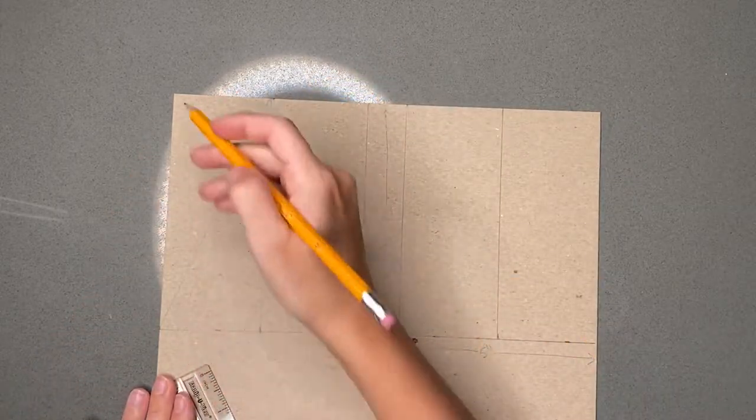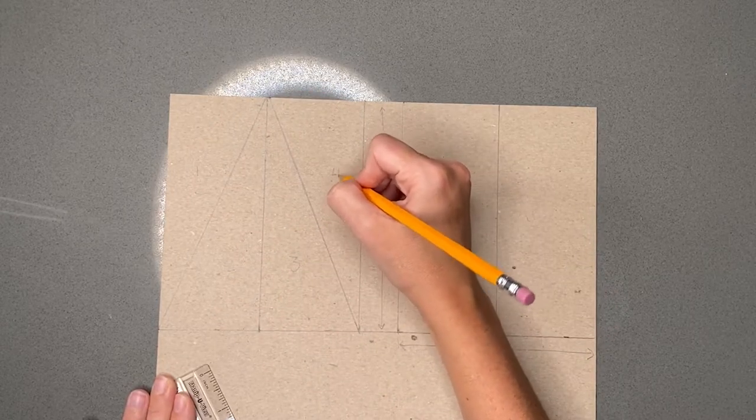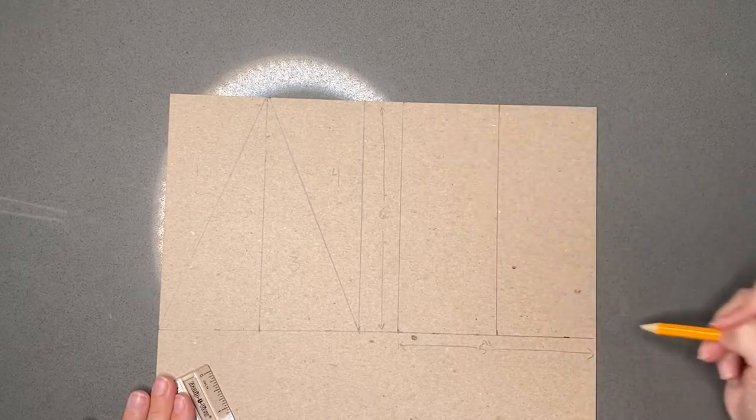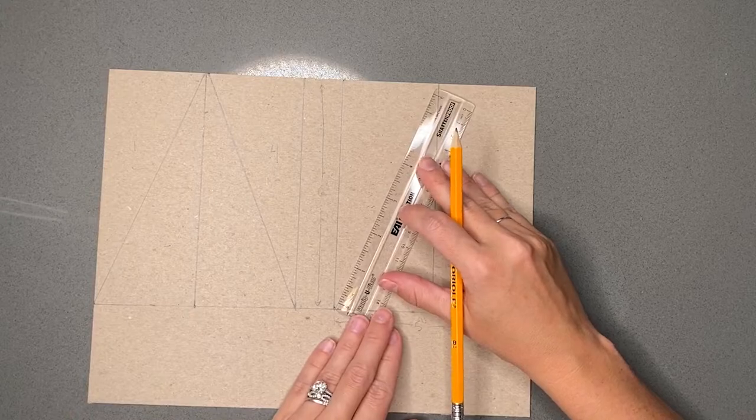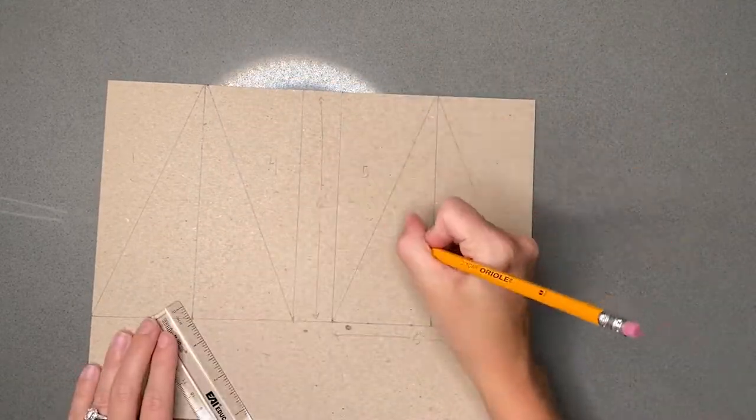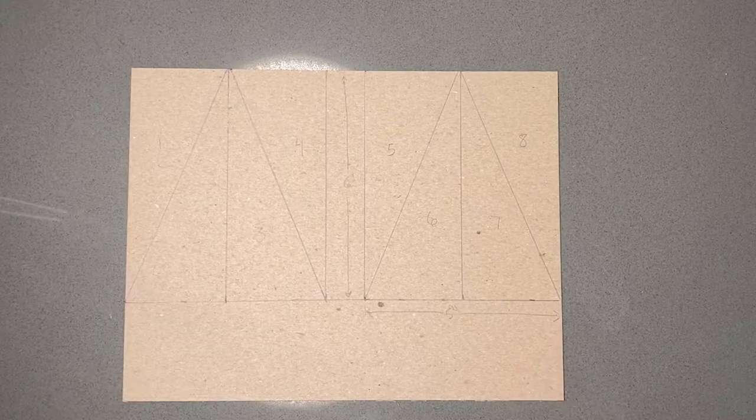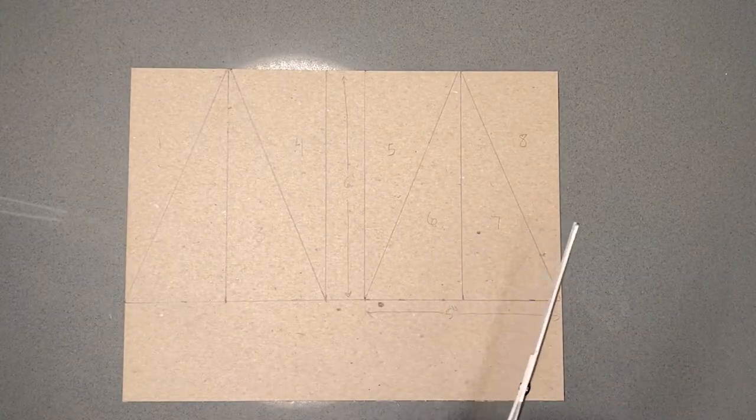So now I have one, two, three, four triangles. I need to repeat so that I have eight total. Once I have all eight triangles drawn, I'm ready to cut out my pieces.